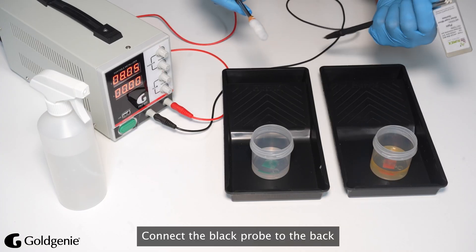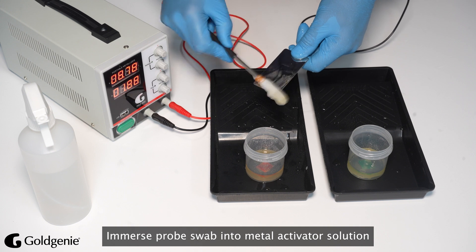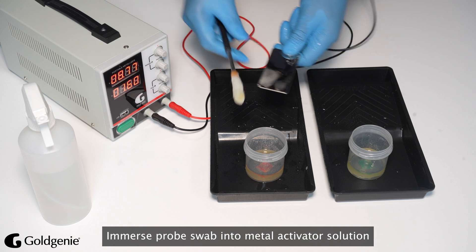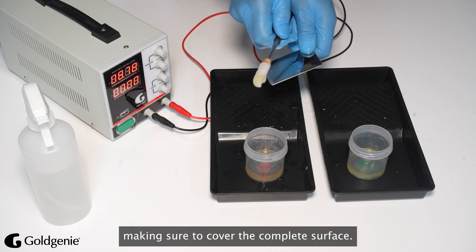Connect the Black Probe to the back of the stainless steel sample provided. Immerse the probe swab into the Metal Activator Solution and brush the sample item up and down briskly, making sure to cover the complete surface.